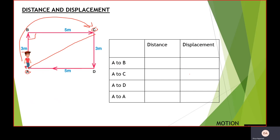For the next case, A to D: the person travels from A to D, so the distance is AB plus BC plus CD, which equals 11 meters. For the displacement, I connect the initial position A to the final position D, giving a displacement of 5 meters.